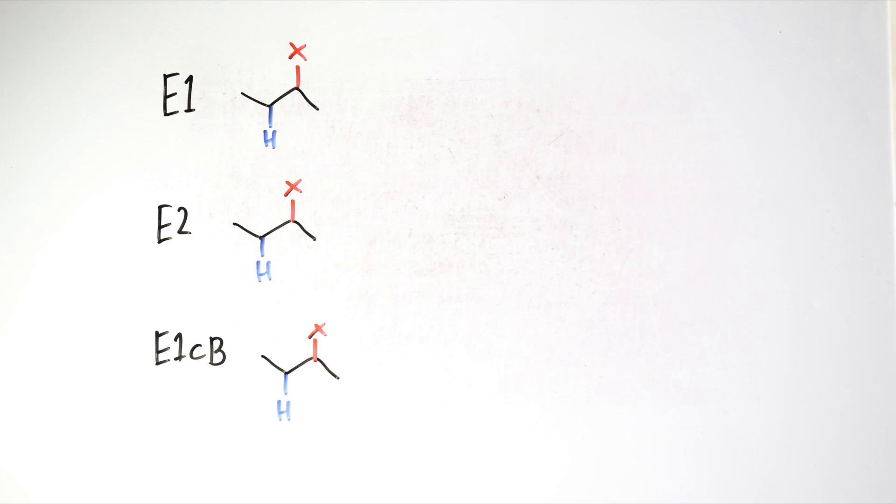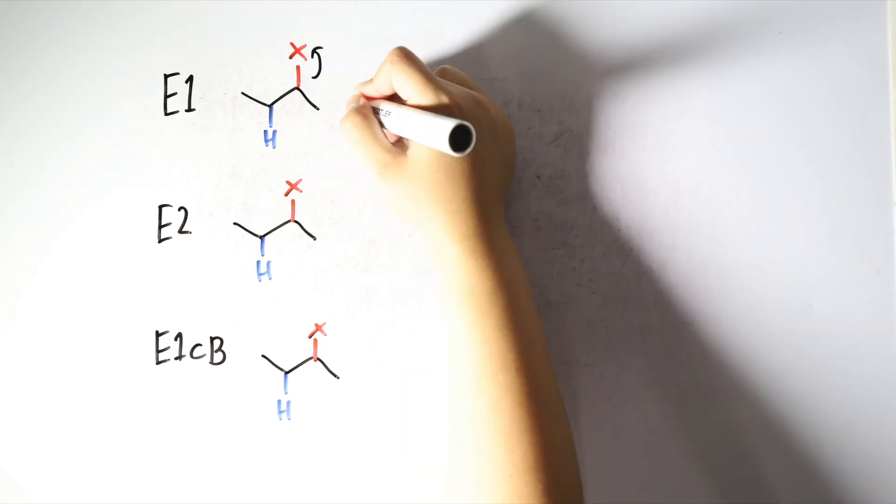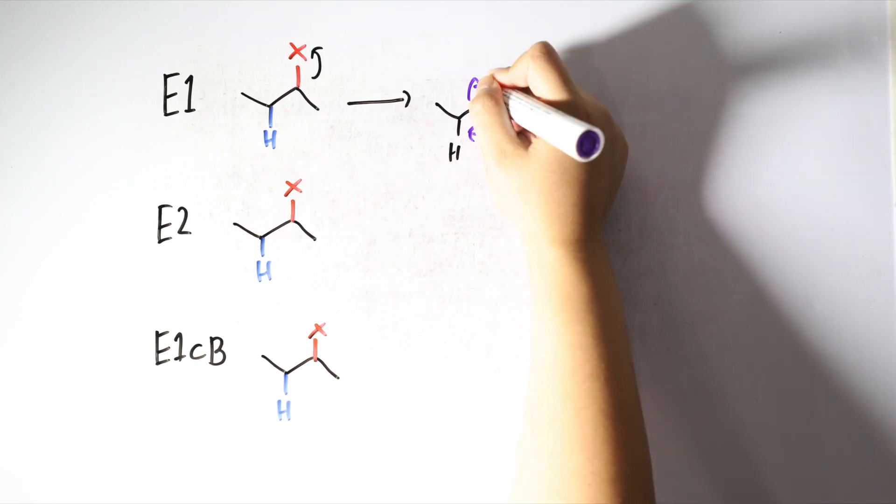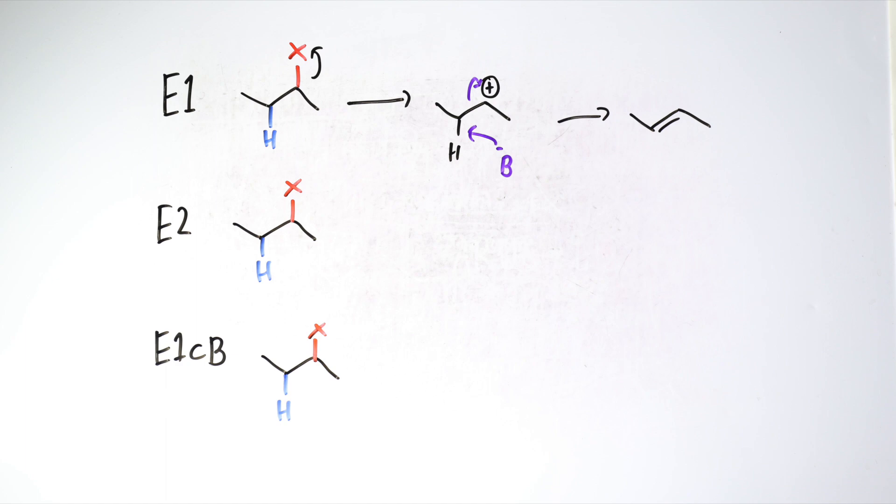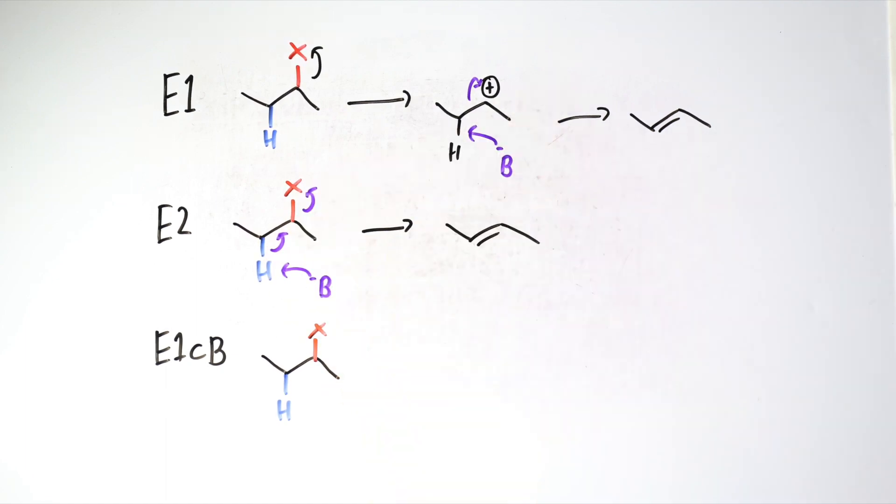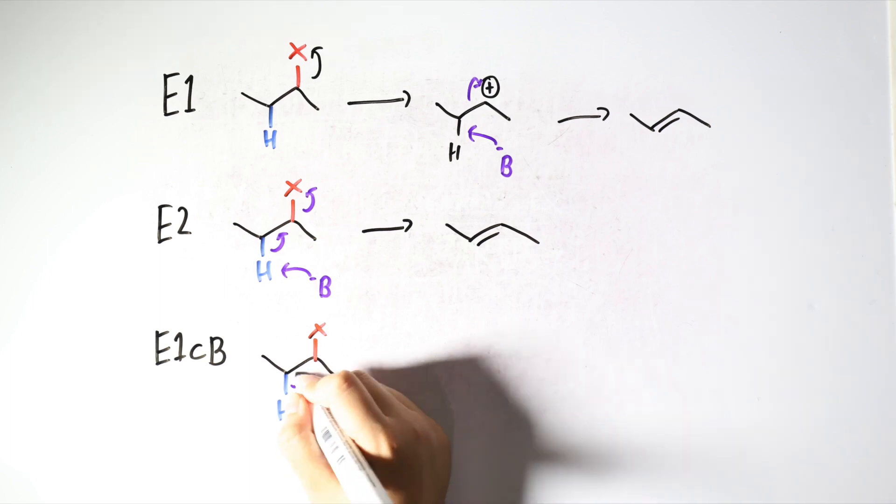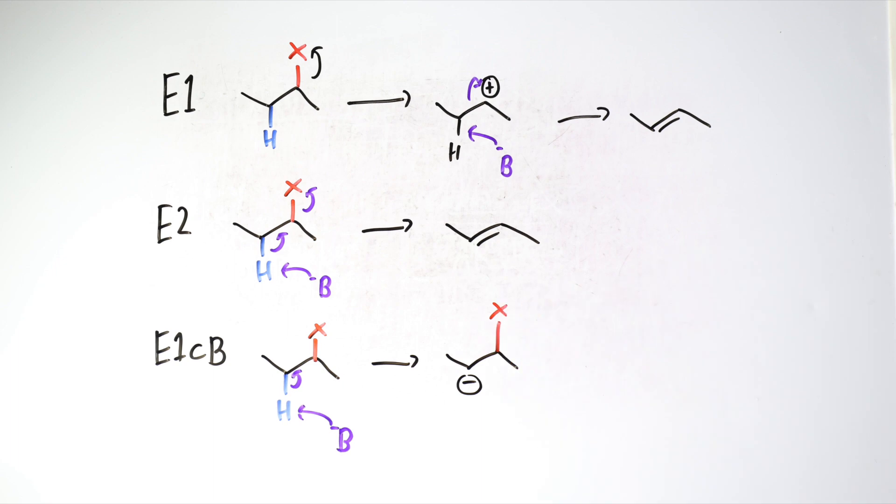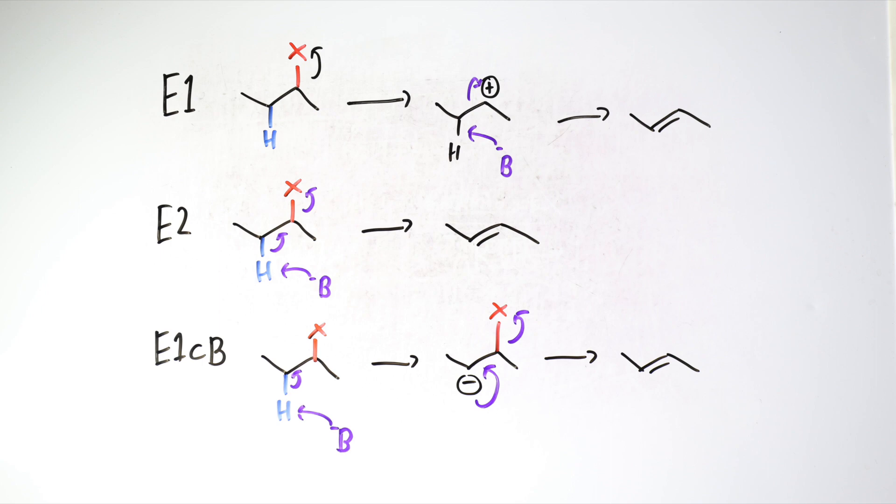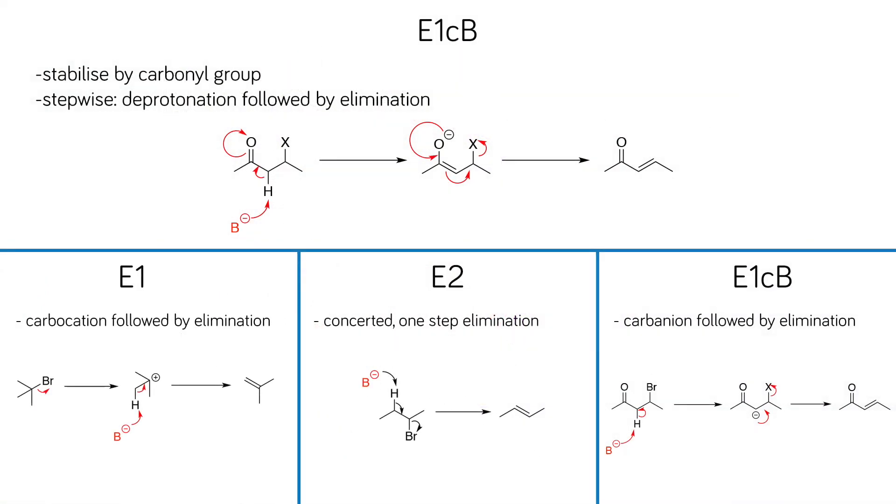We can compare the mechanism of every elimination reaction. In E1 reaction, the leaving group leaves the molecule first forming a carbocation, then base comes along for deprotonation. In E2 reaction, deprotonation and loss of leaving group happen at the same time. In E1CB reaction, base deprotonation happens first forming a carbanion, then the loss of leaving group happens next.